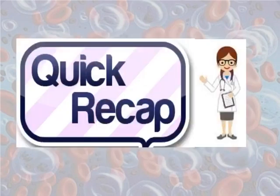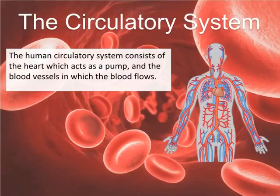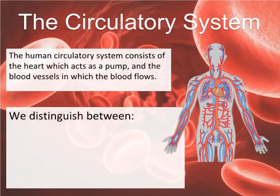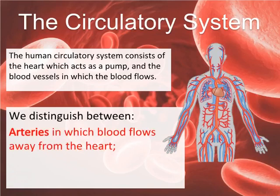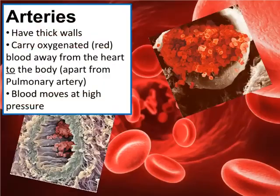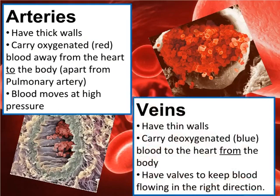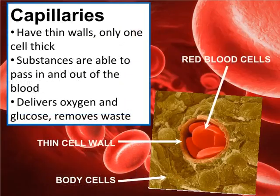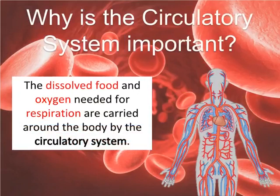Let's have a quick recap. The human circulatory system consists of the heart, which acts as a pump, and the blood vessels in which the blood flows. Arteries carry blood away from the heart; veins carry blood back to the heart. Arteries have thick walls, carry oxygenated blood at high pressure, apart from the pulmonary artery. Veins have thin walls, carry deoxygenated blood, and have valves to keep blood flowing in the right direction. Capillaries have thin walls only one cell thick, allowing substances to pass in and out — delivering oxygen and glucose and removing waste. The circulatory system is important because dissolved food and oxygen needed for respiration are carried around the body by it.